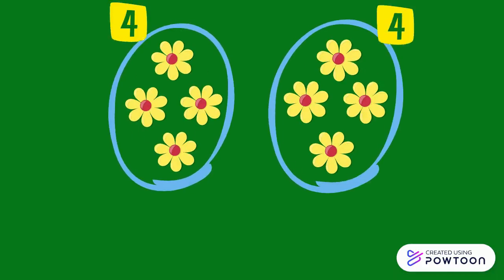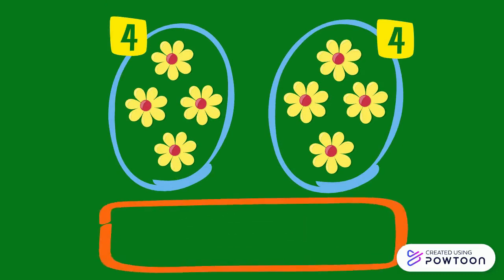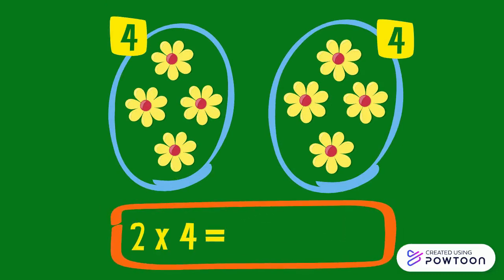There are two groups of four flowers each. So the total number of flowers is 2 times 4 equals 4 plus 4 equals 8. So 2 times 4 equals 8.